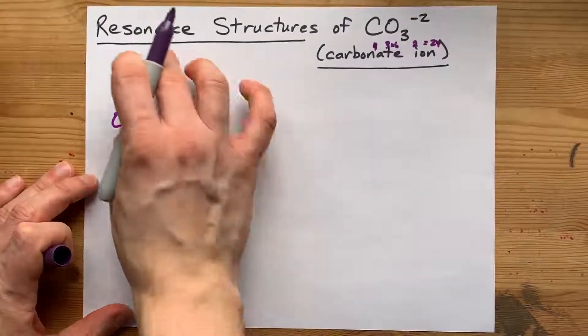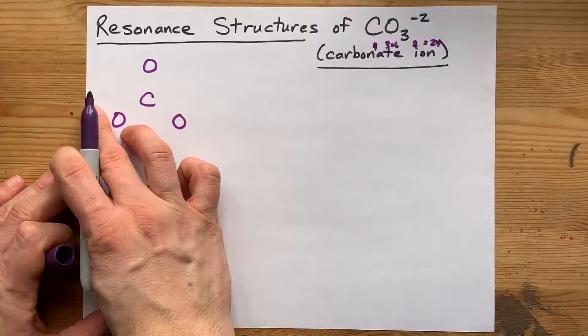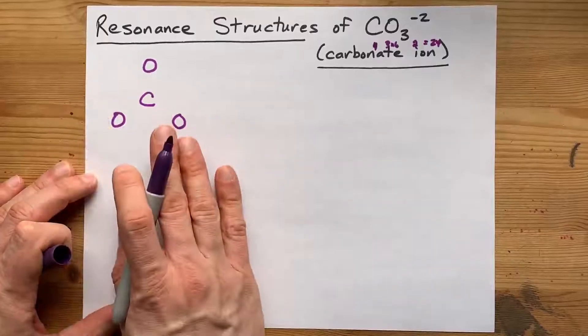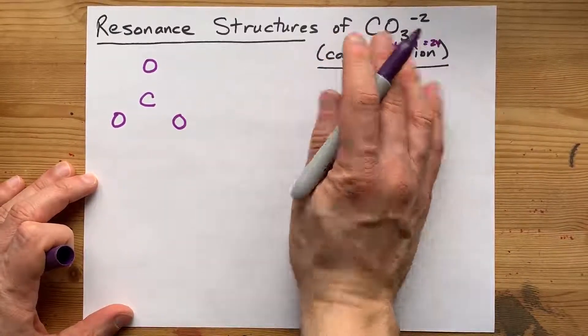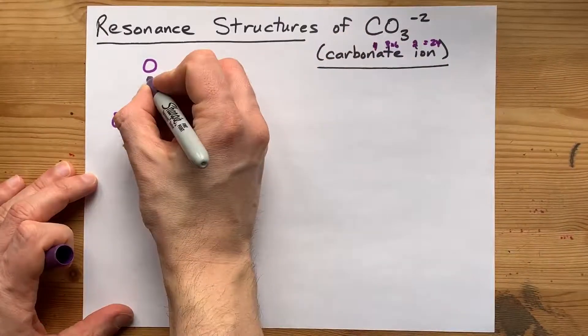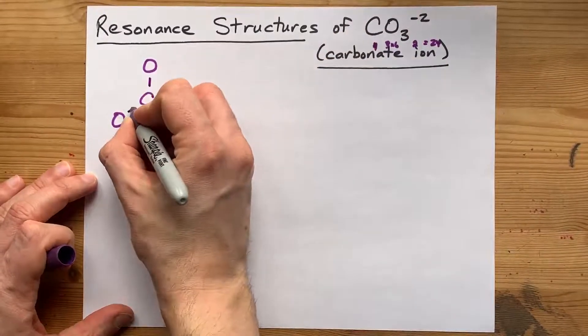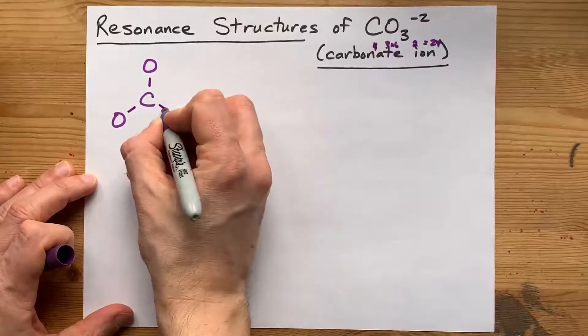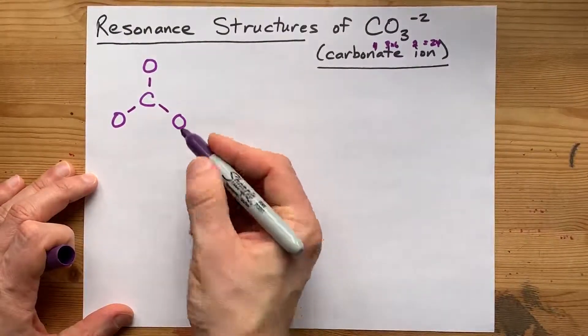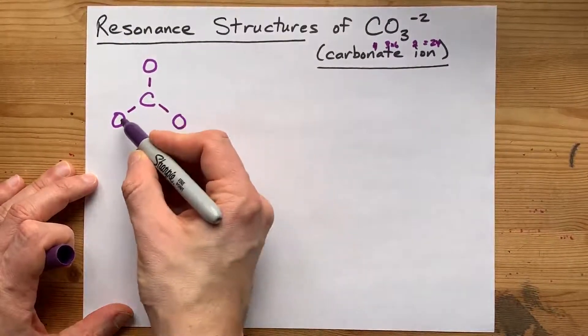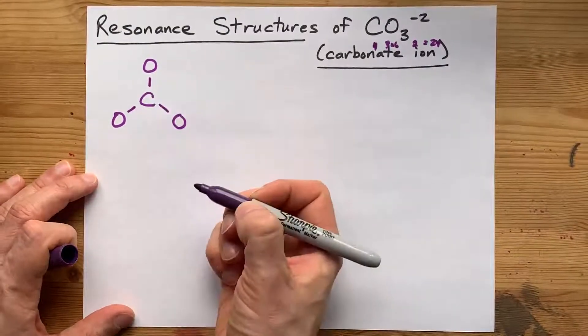The way that I draw Lewis structures when it's only non-metals is to start with a single bond between the central atom and all the surrounding atoms. That accounts for 2, 4, 6 electrons.